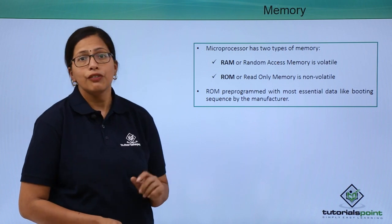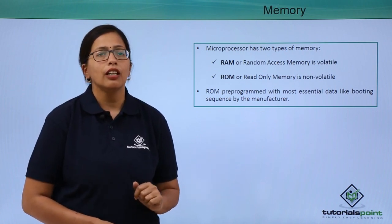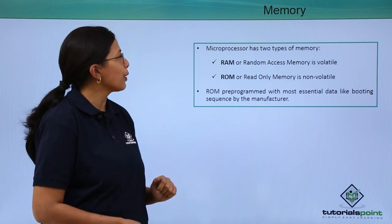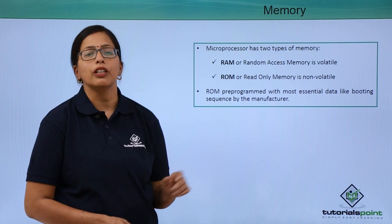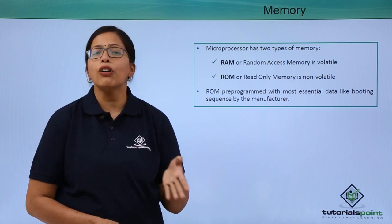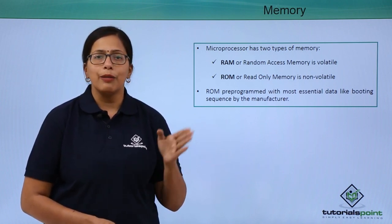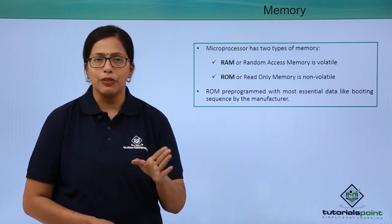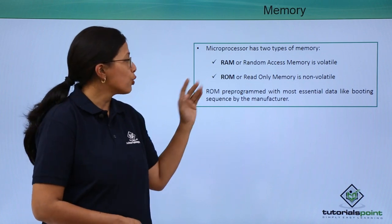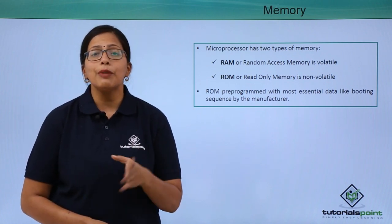Finally, the most important thing: the memory of the microprocessor. There are two types of memory — RAM, or random access memory, and ROM, or read only memory.